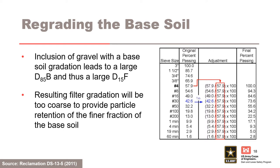Regrading the base soil. The concept of regrading the base soil was developed by Sherrard to account for broadly graded soils. Broadly graded soils can be internally unstable — inadequate particle retention — and regrading corrects for this phenomenon. Permitting inclusion of gravel with the base soil gradation will lead to large D85 of the base soil and subsequently large D15 of the filter. Since gravel particles do not have any particle retention capability in broadly graded or gap-graded soils, the resulting filter gradation will be too coarse to provide particle retention of the finer fraction of the base soil. Regrading is performed on the number 4 sieve so that the maximum size is 4.75 millimeters. Obtain correction factor by dividing 100 by the percent passing the number 4 sieve, then multiply the percentage passing each sieve size smaller than the number 4 sieve by this correction factor.